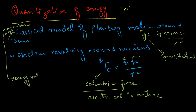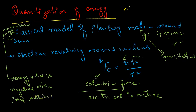When the energy value is negative, it means the planet is trapped within the solar system. This negative value represents the bound motion of the planet around the Sun.